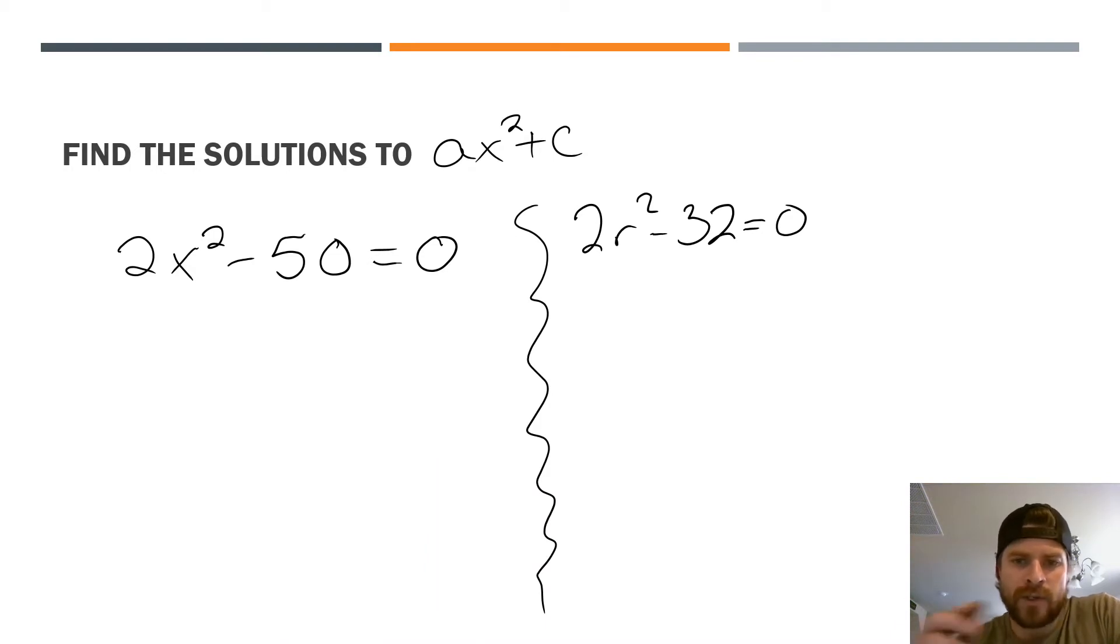Okay, first off, you've got two examples here, one on the left and one on the right. One on the left says 2x² - 50 = 0. One on the right, 2r² - 32 = 0. Our goal is to get the variable isolated, so what we want is x equals a value when we're all said and done.